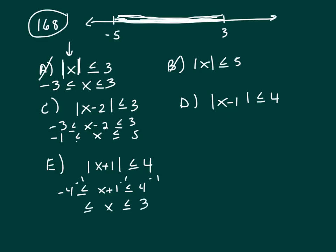That's 3, and negative 4 minus 1 is negative 5. And that's what's shaded on the number line.